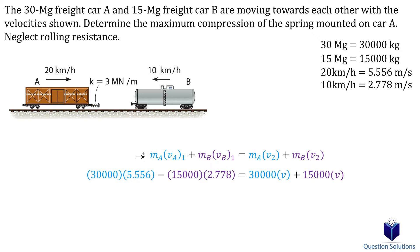Remember that a megagram is 1000 kilograms, and to convert kilometers per hour to meters per second. After solving for velocity, we find that after the cars collided, both of them move with a velocity of 2.7 meters per second to the right.